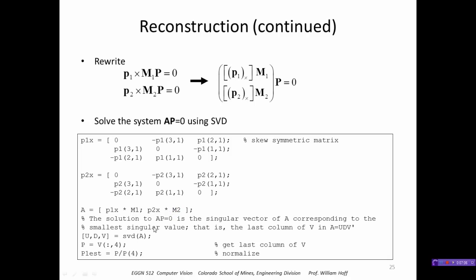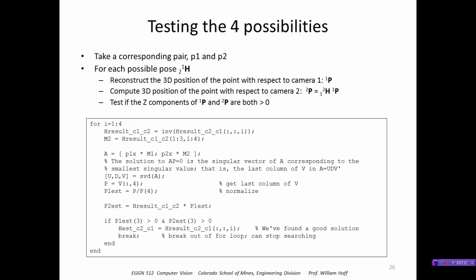We multiply those times M1 and M2, and then we solve for X using that familiar process of taking the smallest singular value of the SVD of A. So the way we check these combinations then is we take any pair of points, we check for all four of our combinations of poses, and we reconstruct that point with respect to the two cameras P1 and P2. And we check to see if the Z components of those two points are both greater than 0, namely they're in front of the two cameras.